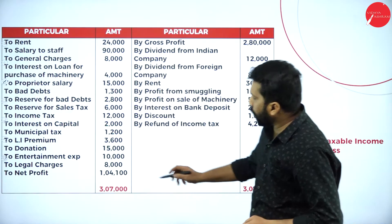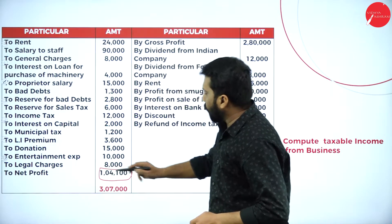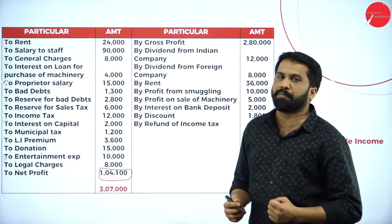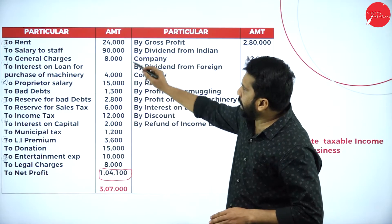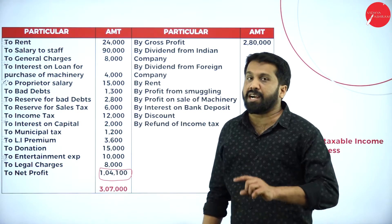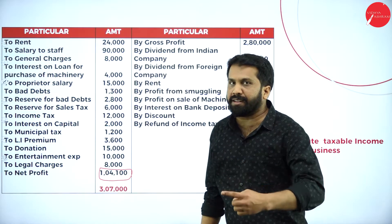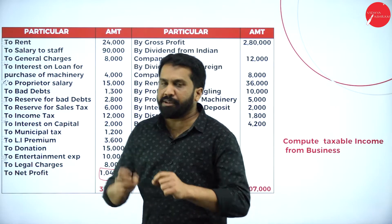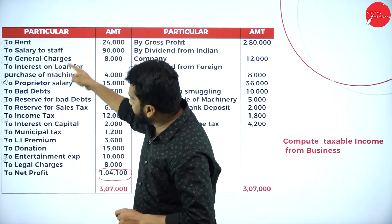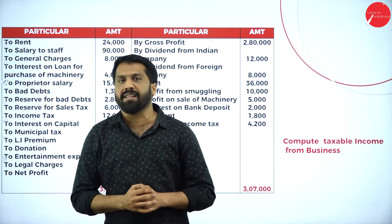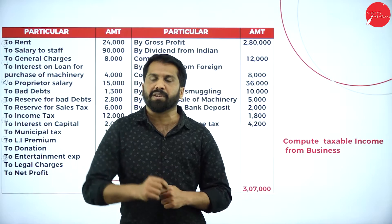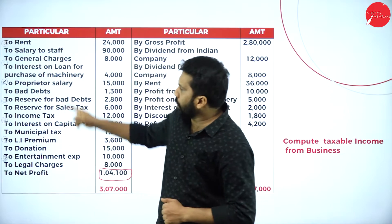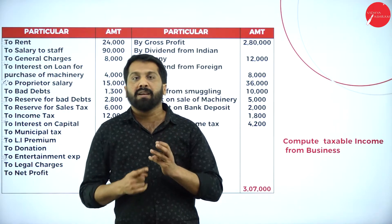Always start with your net profit first. Net profit is 1,04,100. Once you have net profit, check all the expenses which are not directly related to business — those we are supposed to add back. Write down these items because every problem it will be helpful for you.